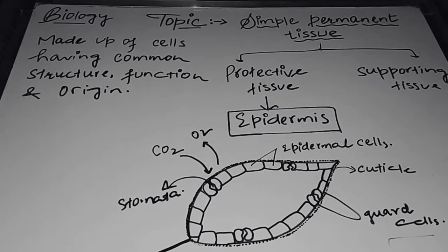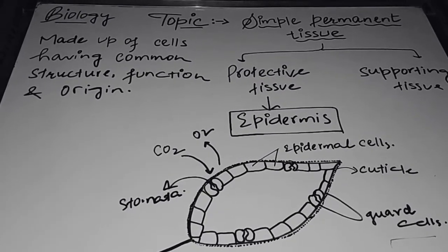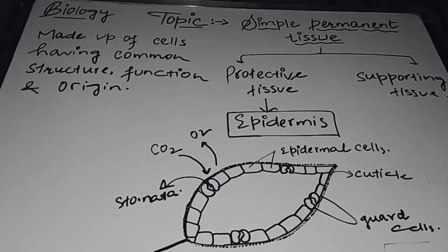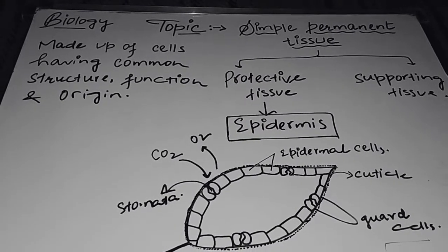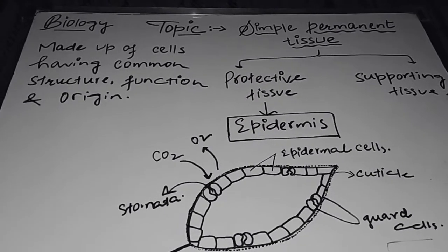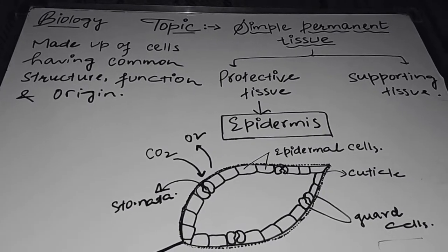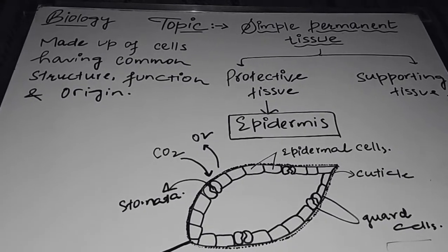We studied meristematic tissues or meristems, and now we will take permanent tissues. As you know, permanent tissues are made up of cells which have lost their power of cell division. Overall cells do divide, so collectively they produce permanent tissues. So permanent tissues are classified into two types.